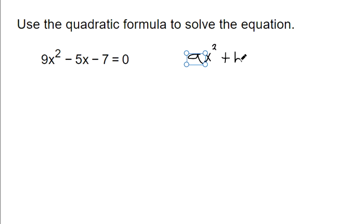Standard form of a quadratic looks like this. There's an x squared, there's a plain old x, and then there's a number without an x attached to it. And it's set equal to 0.